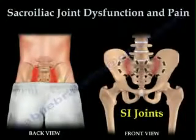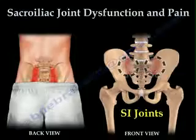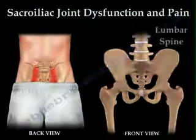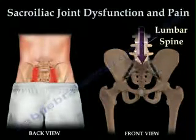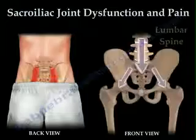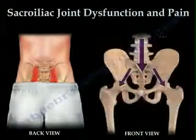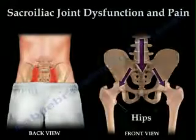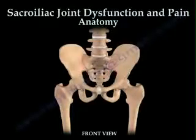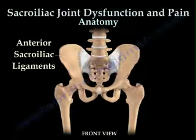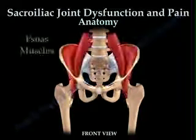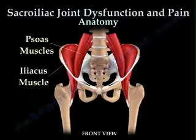The SI joints are weight-bearing joints. These joints distribute weight from the spine to the lower extremities, through the hip joints. From the front, the sacroiliac joint is supported by the anterior sacroiliac ligaments. There are also strong muscles in the front of the sacroiliac joint.